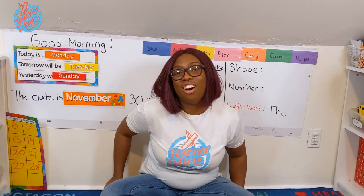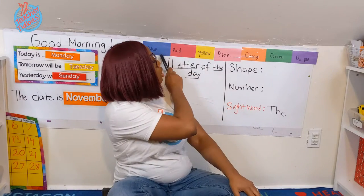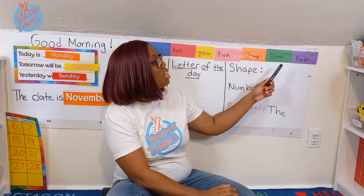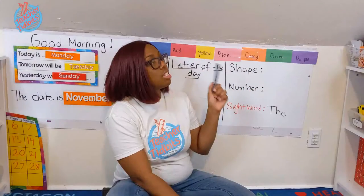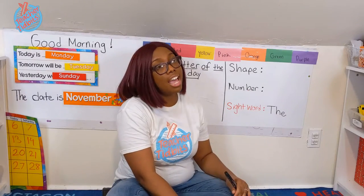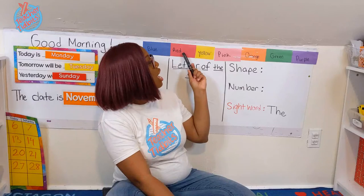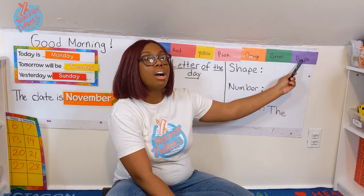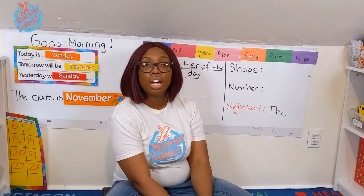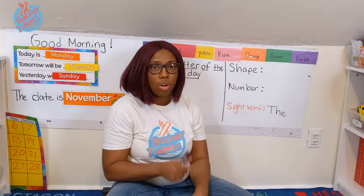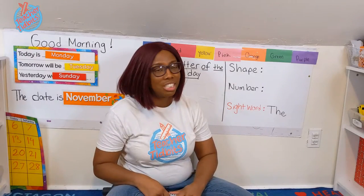Now let's get ready and sing our colors song. Can you sing with me? Blue, red, yellow, and pink. Orange, green, and purple. These are the colors of the world, the colors that we see every day. Those are our colors, and we see them every day. We see them everywhere. We'll be on the lookout for different colors today.